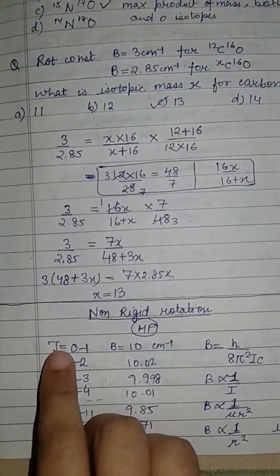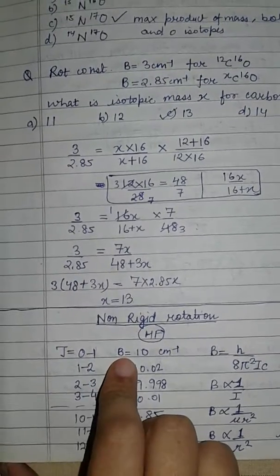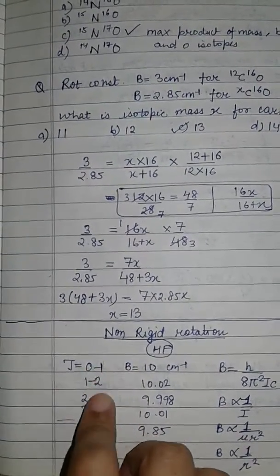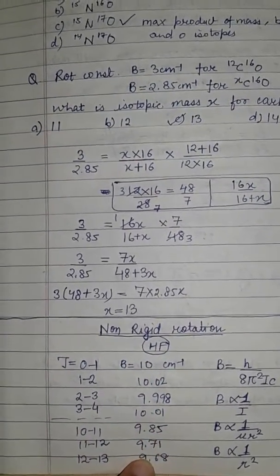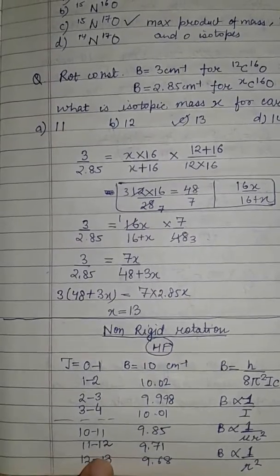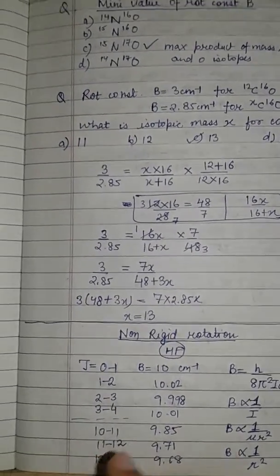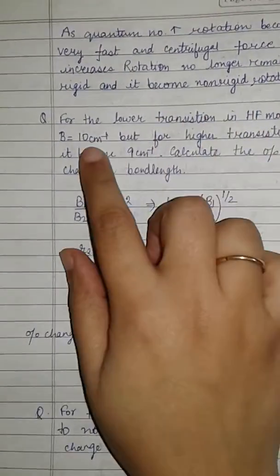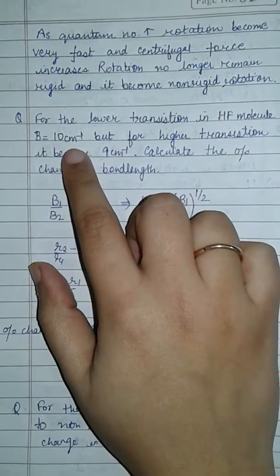We also know that J_max, the rotational quantum number, and B, the rotational constant, are inversely proportional. As we increase the J value, the rotational constant is decreasing, and it decreases more as we increase the J value.